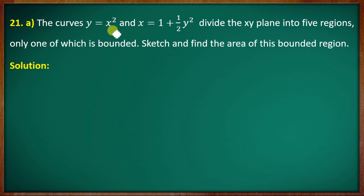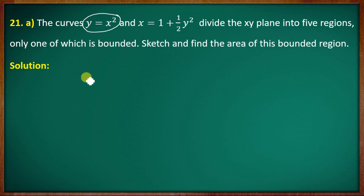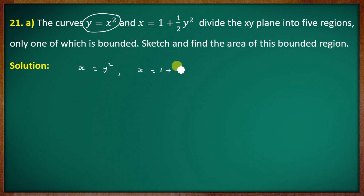For the first part: y = x² means x = √y. The other curve is x = 1 + ½y². We sketch both curves and identify the bounded region.